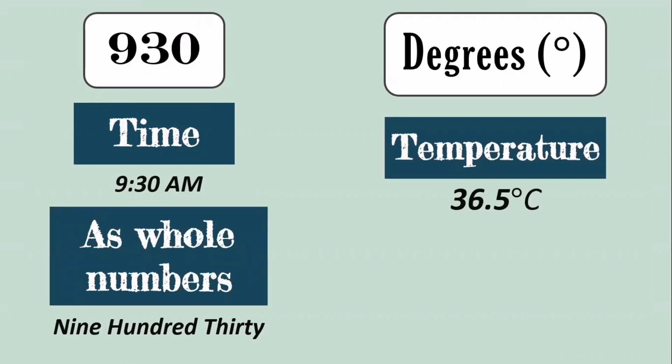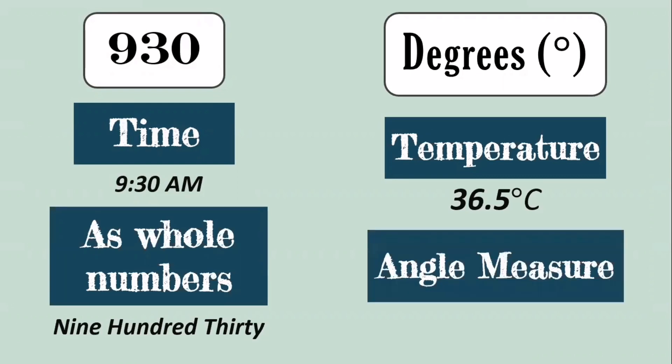Example, 930 it could mean time, it could be 9:30 AM, or 930 as a whole number. Other example in symbols: we have degrees. So degrees can be used in different contexts. Example, in temperature we have 36.5 degree Celsius. And also we can use degree in angle measurement in geometry, so we have 30 degree, 45 degree, and 60 degree. So numbers have many uses depending on the context we use numbers and symbols.